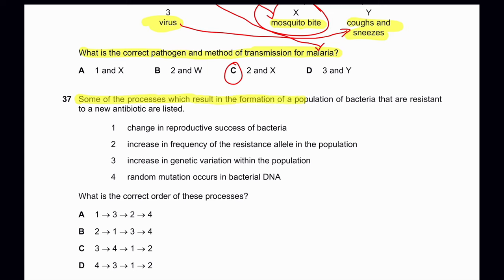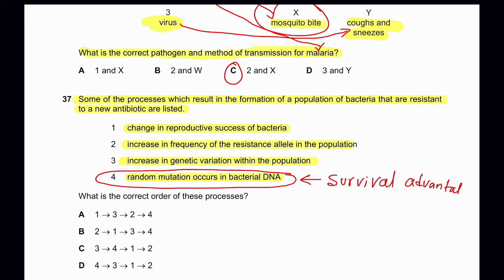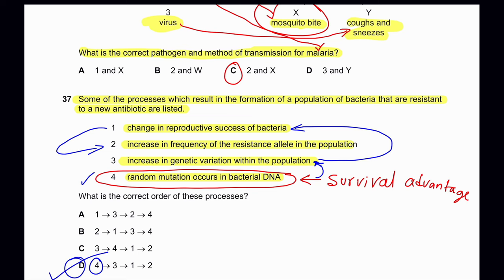Question 37: Some processes resulting in antibiotic resistance in bacteria are listed: 1) Change in reproductive success, 2) Increase in frequency of resistance allele, 3) Increase in genetic variation, 4) Random mutation in bacterial DNA. The correct sequence is: first, random mutation (4) occurs giving a survival advantage; this increases genetic variation (3); which increases reproductive success (1); which in turn increases the frequency of the resistance allele in the population (2). Only option D has 4 as the first step. So D is the correct answer.